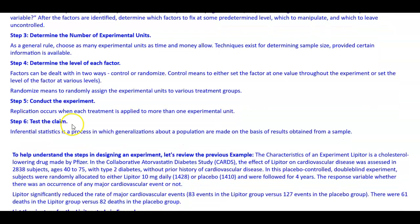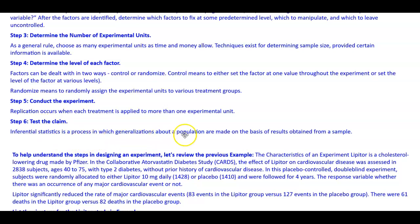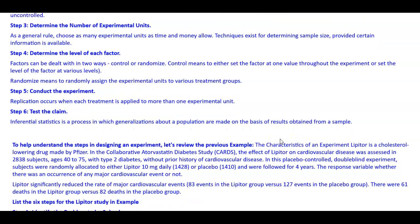Step five: conduct the experiment. Replication occurs when each treatment is applied to more than one experimental unit. Step six: test the claim. Inferential statistics is a process in which generalizations about a population are made on the basis of results obtained from a sample.